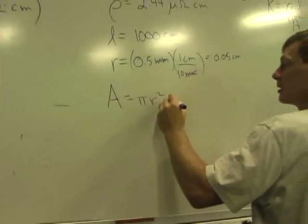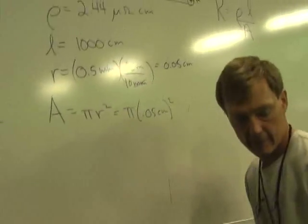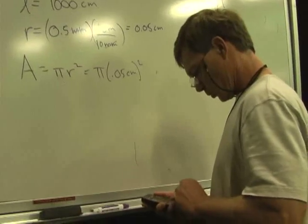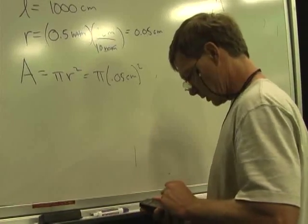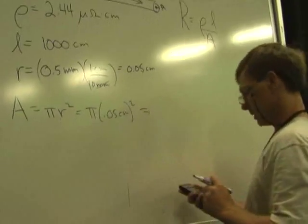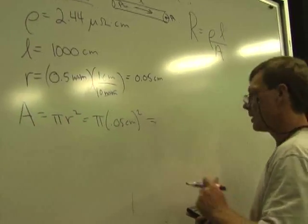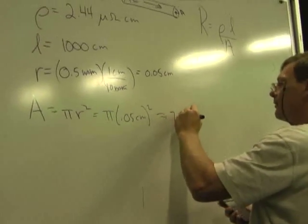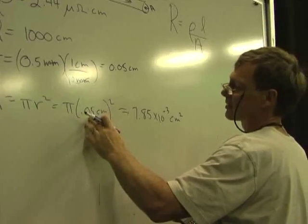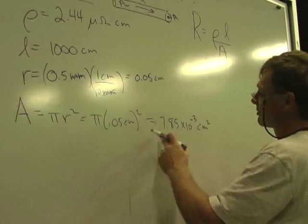Which is pi times 0.05 centimeters squared. That doesn't sound right. Yeah, that's better. 7.85 times 10 to the minus 3 centimeters squared, right? Because this is 0.05 times 0.05. That's going to be like a 40th times 1,600, 3 over 1,500. Yeah, that's better. All right.